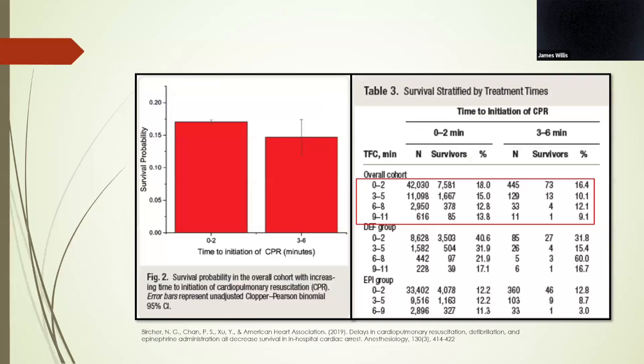This analysis of index cardiac arrest cases from the Get With The Guidelines registry found that delays in the initiation of chest compressions had an association with decrease in hospital cardiac arrest survival rates, and they were also looking at delays to defibrillation for shockable rhythms and epinephrine for non-shockable rhythms, which you see in the bottom two groups here.